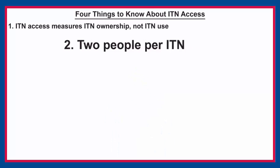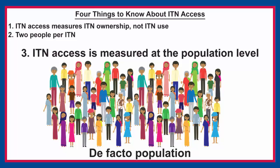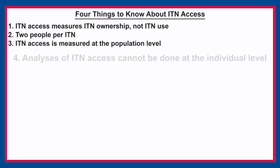Third, ITN access is measured at the population level. This means that the unit of observation for this indicator is the de facto population, or all the people who stayed in the household the night before the survey. Finally, it is important to note that analyses of ITN access cannot be done at the individual level.